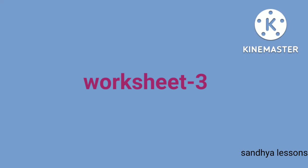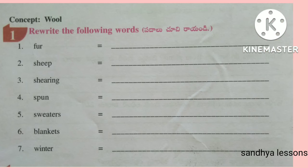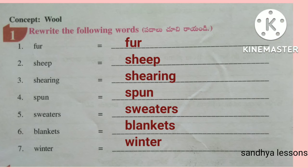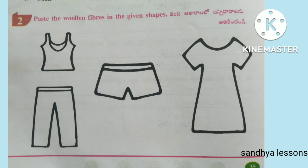Worksheet 3. First, rewrite the following words: Fur, Sheep, Shearing, Spun, Sweaters, Blankets, Winter. Second, paste the woolen fibers in the given shapes.